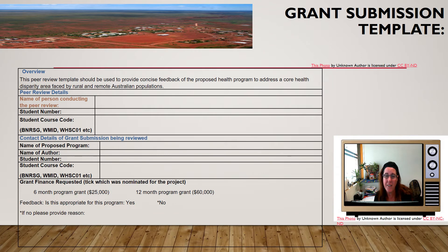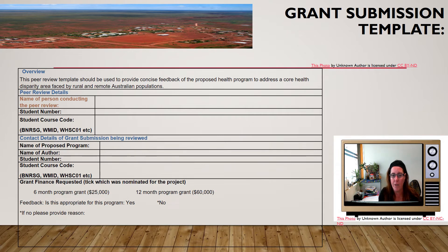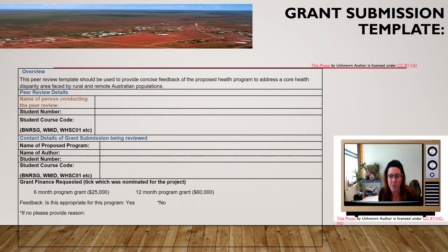So the peer review template looks like this. You've got the same type of grant submission template, but there are a few little bits added and a few bits taken away. We need you to put down your own details as the person conducting the peer review, and I've asked you to identify which course code you're in. That's relevant because it gives some context to what you're actually reviewing. For example, I might be a health science student peer reviewing work by a midwifery student, and I can see that the work I'm reviewing is quite well aligned to that student's course goals.